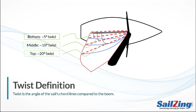Sails have twist because the leech of the sail isn't held in place by a boom or mast; therefore the leech will want to fall away when the wind hits it. This is why we often say that twist control is the same as leech control.